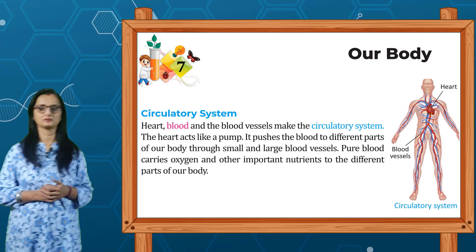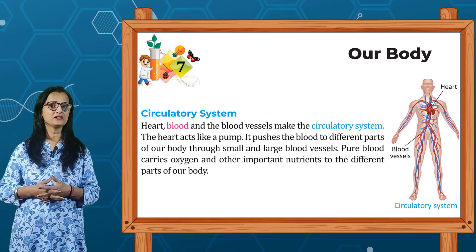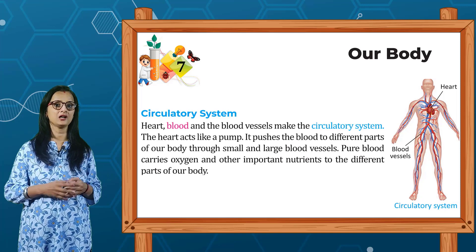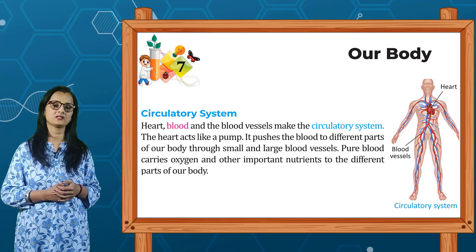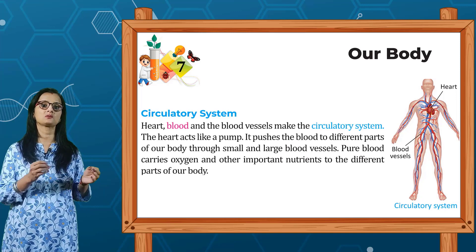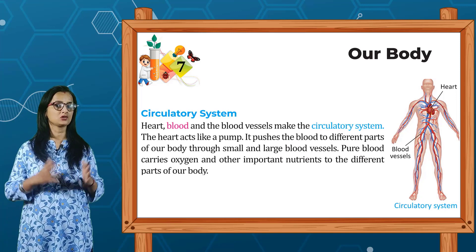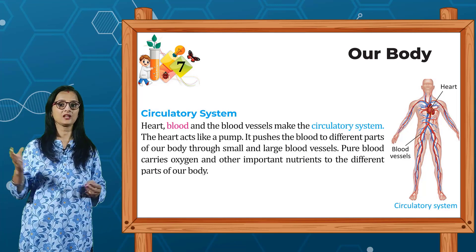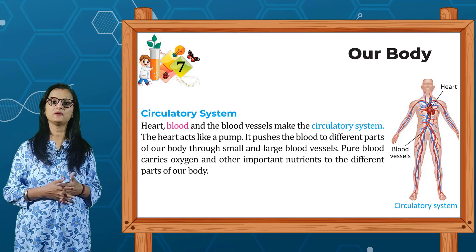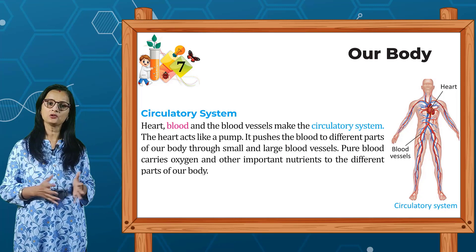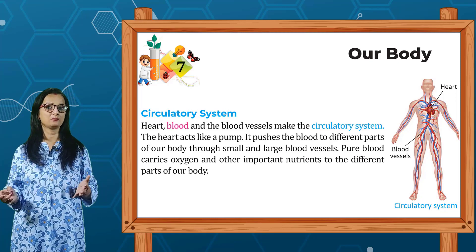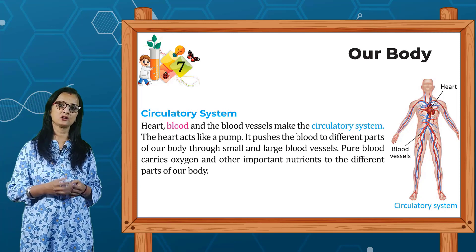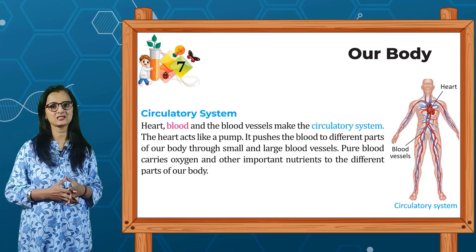Next is the circulatory system. Heart, blood and blood vessels make the circulatory system. The heart acts like a pump — it pushes blood to different parts of our body through small and large blood vessels. As you can see in this picture, the circulatory system includes the heart and blood vessels.